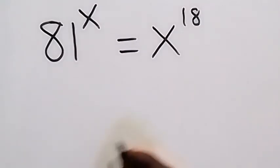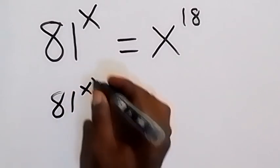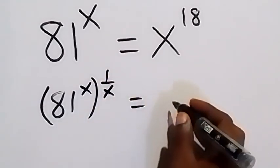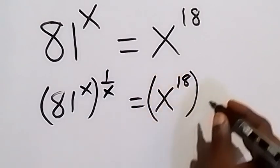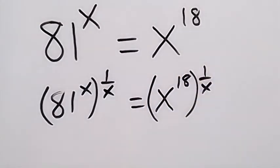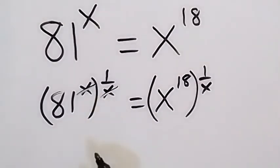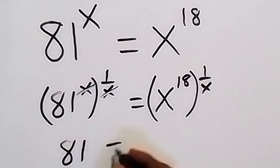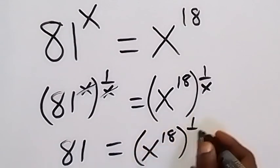From here, let's multiply both powers by 1 over x. We have 81 raised to the power x, then multiply by 1 over x. Also on this side, we multiply by 1 over x — that's x raised to power 18, multiplied by 1 over x in the power. Then x will cancel each other because this power multiplies from the law of indices, and this will mean 81 here, then equals to x raised to the power 18, then all raised to the power 1 over x.